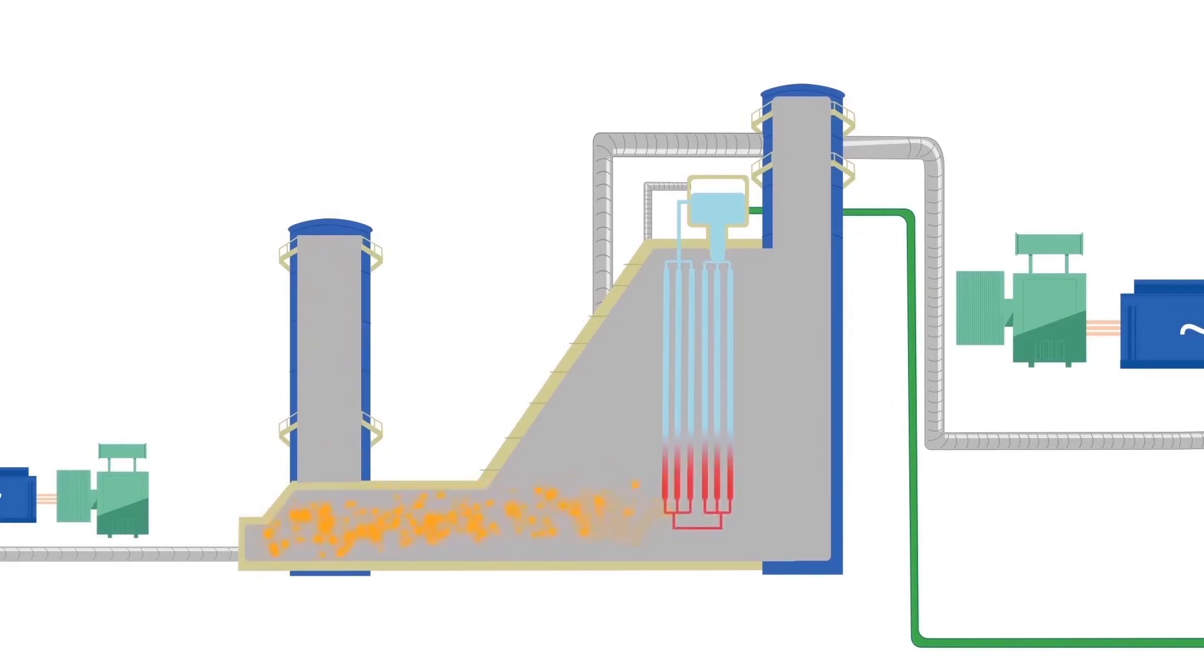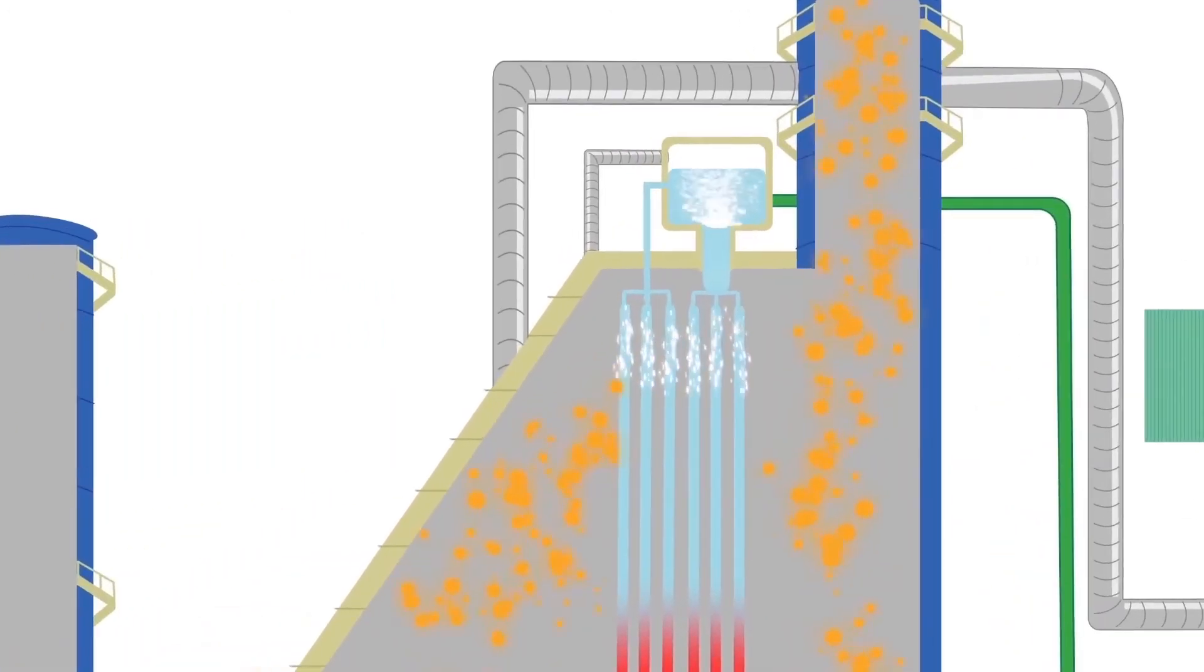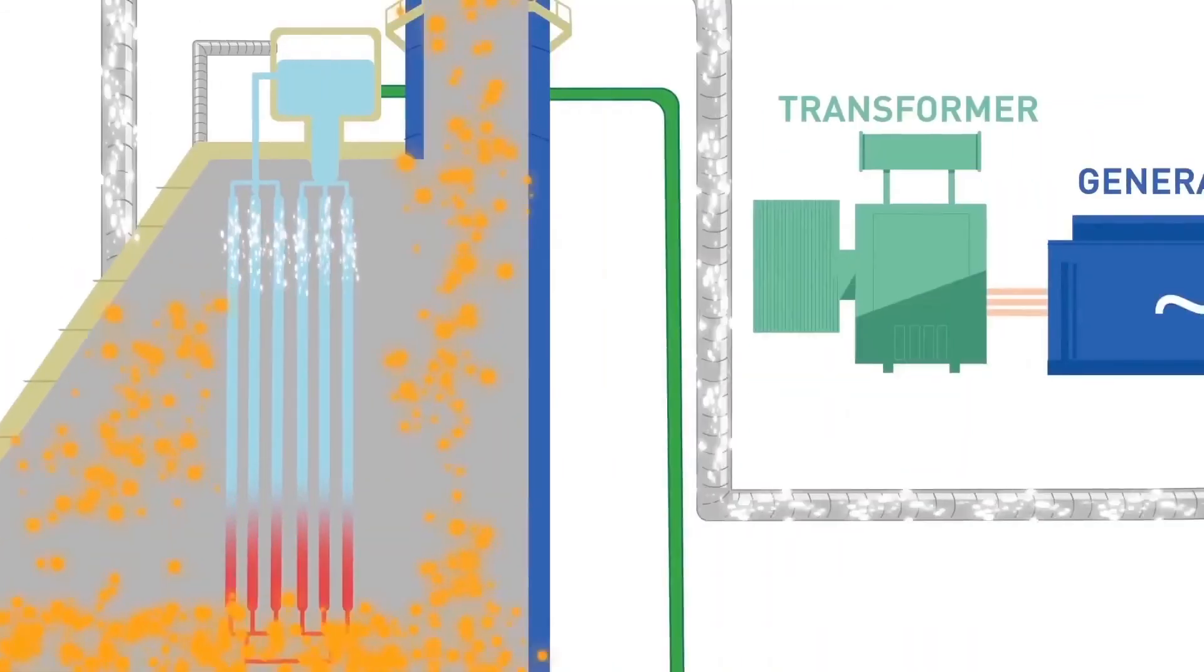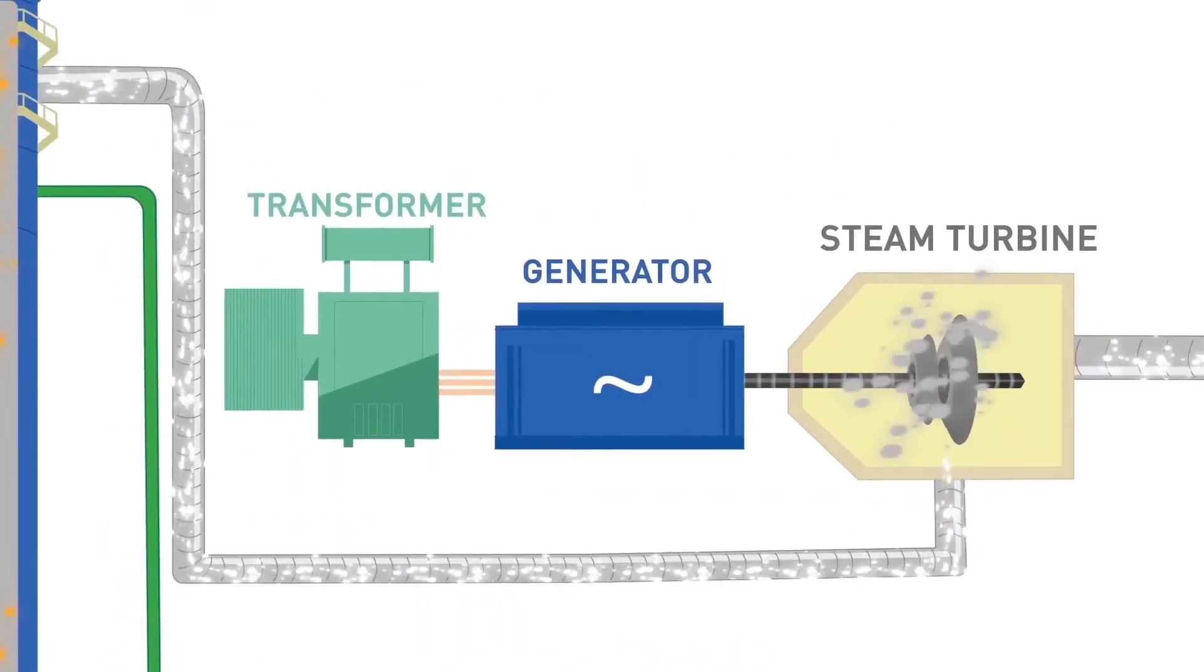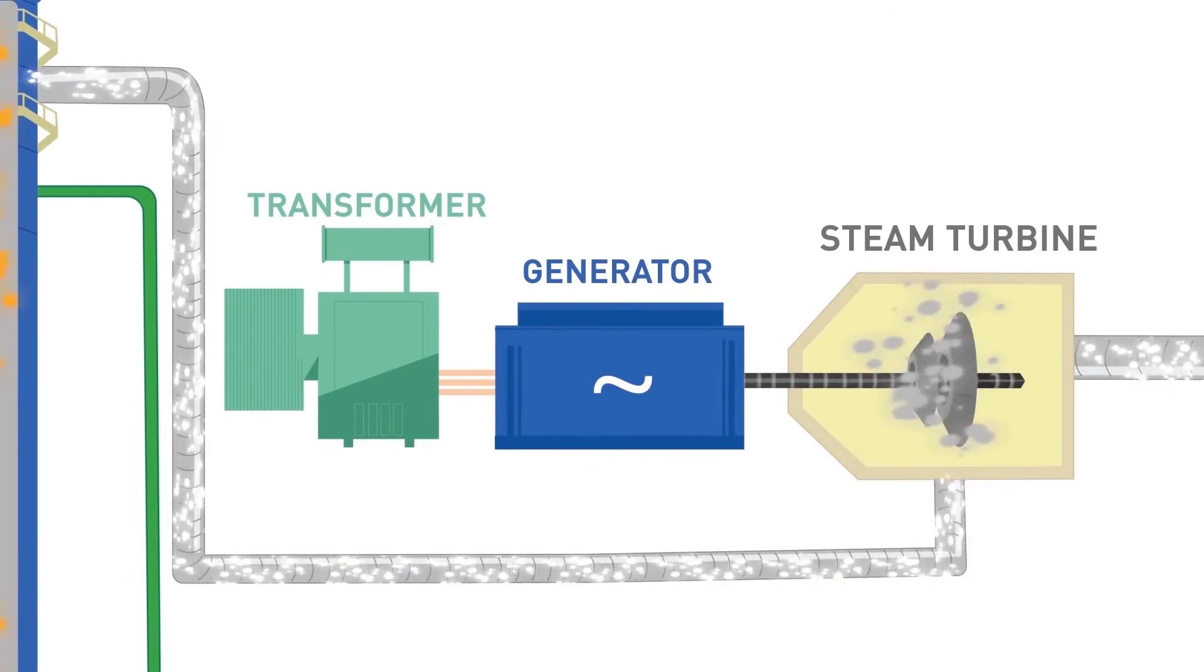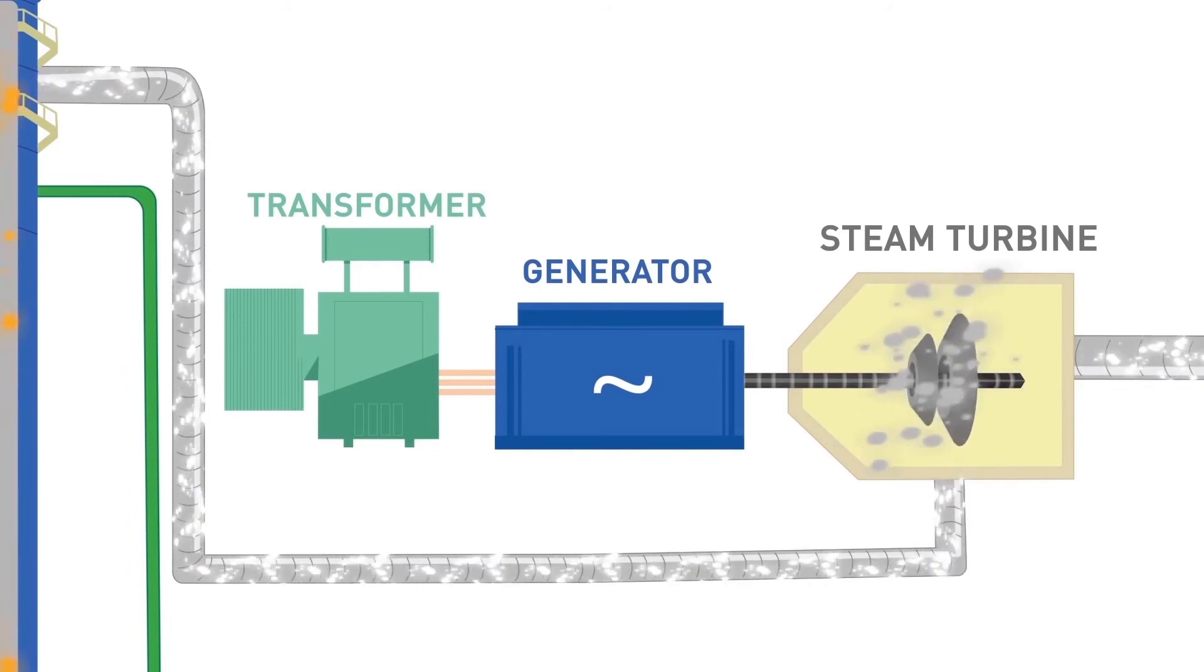Demineralized water contained in boiler drums flows through a series of tubes where it is heated and converted into superheated steam at 103 bars and 540 degrees Celsius. This superheated steam then expands within the steam turbine, causing the turbine shaft, which is connected to the generator, to rotate, thus producing electricity.